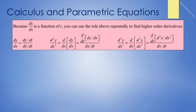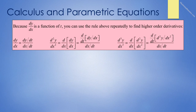We have a formula for dy/dx in terms of t, so we can use that rule repeatedly to find higher-order derivatives. The second derivative of y with respect to x is the derivative with respect to t of dy/dx, all over dx/dt. The third derivative is the derivative with respect to x of the second derivative, which equals the derivative with respect to t of d²y/dx² over dx/dt. This seems complicated, but in reality it isn't.